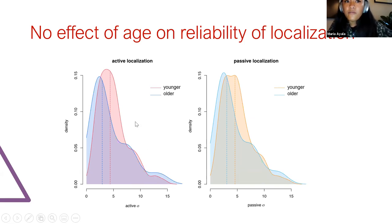The dashed lines represent the variances for each localization condition, and as you can see, there seems to not be an effect of age on reliability of localization.